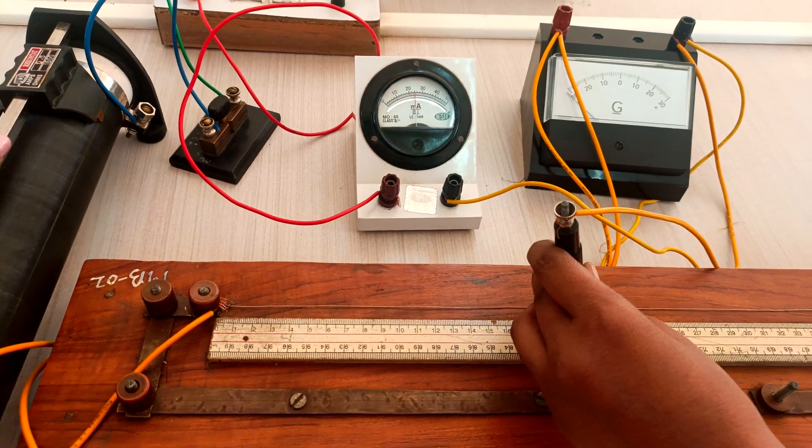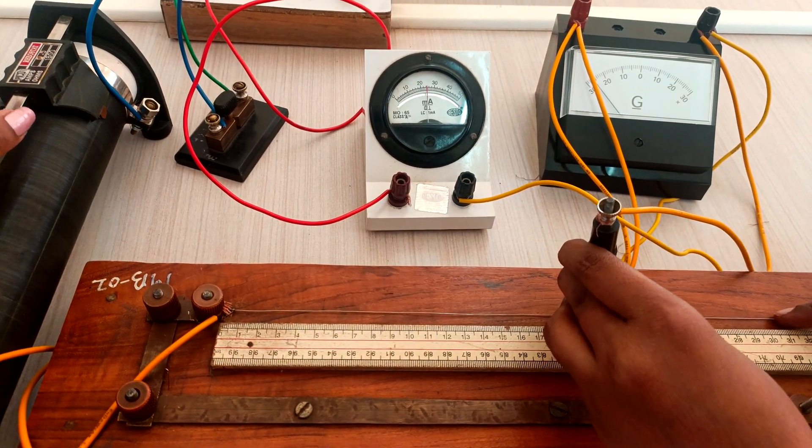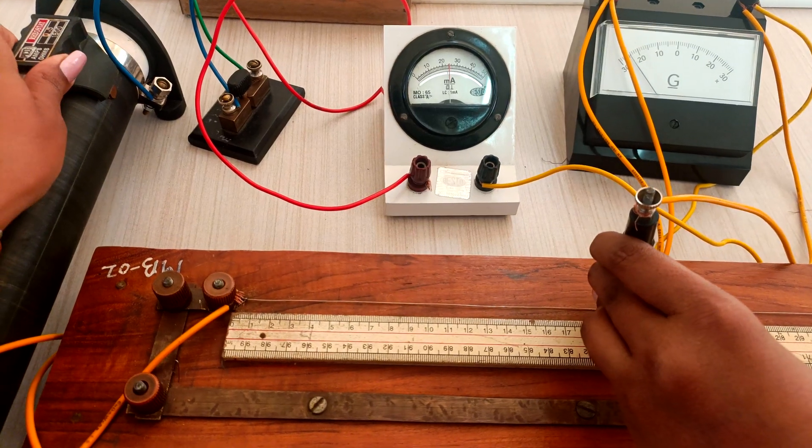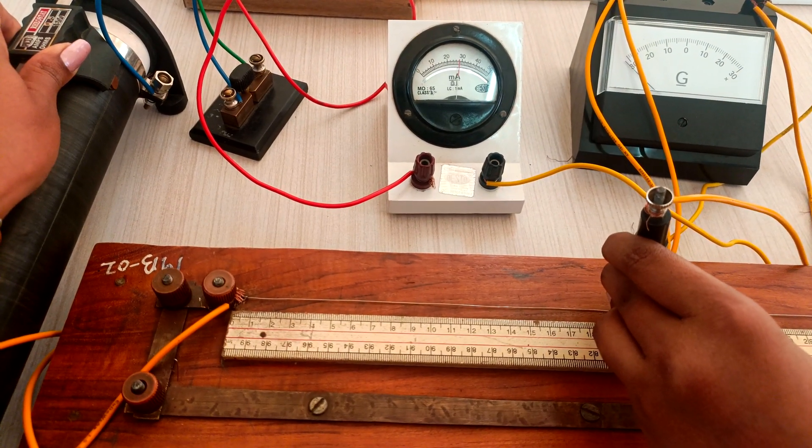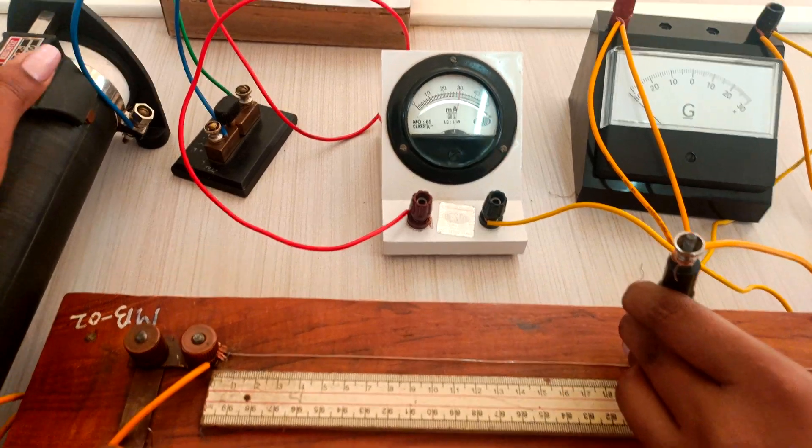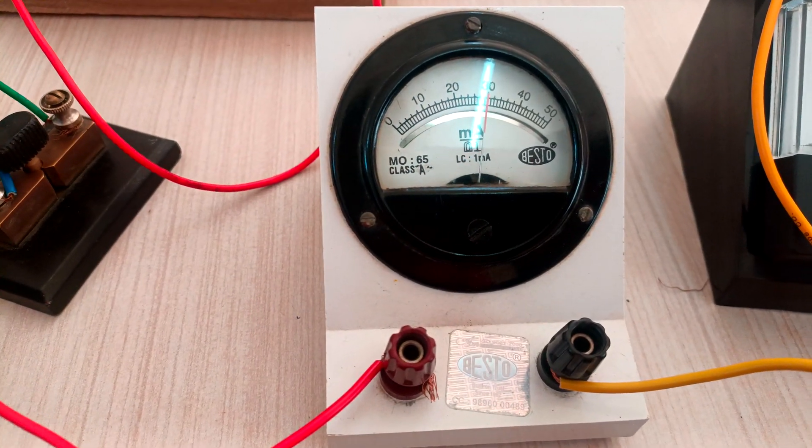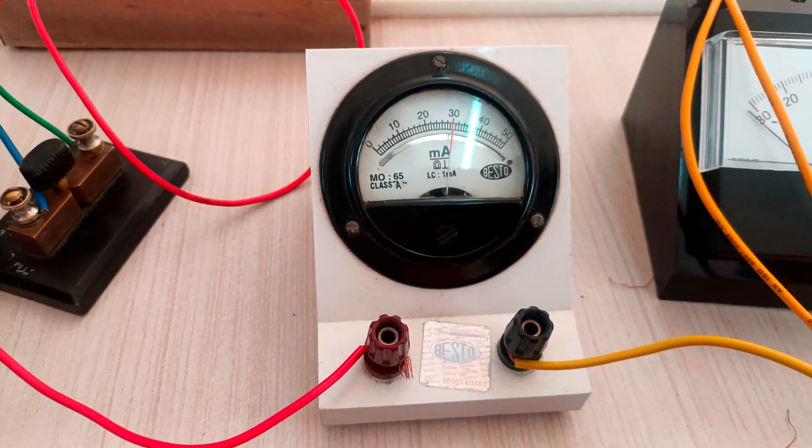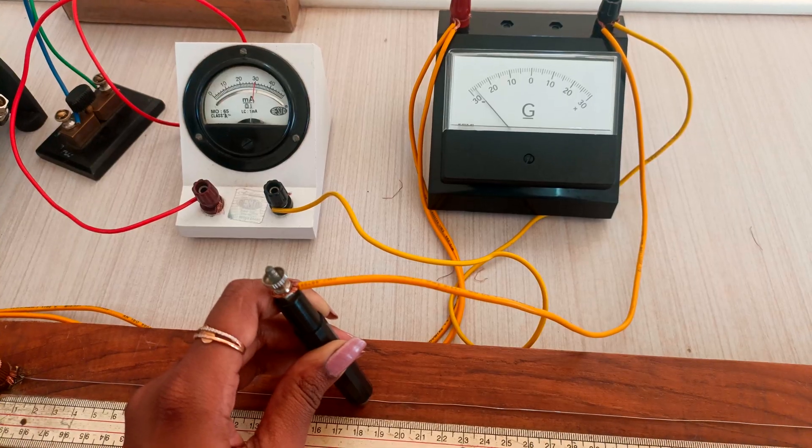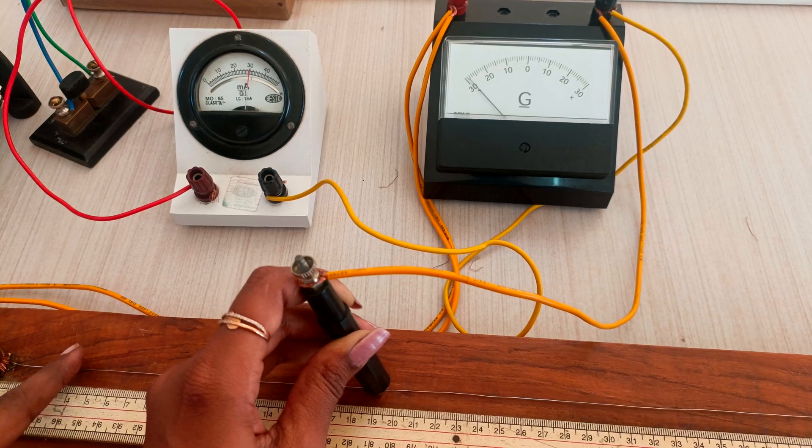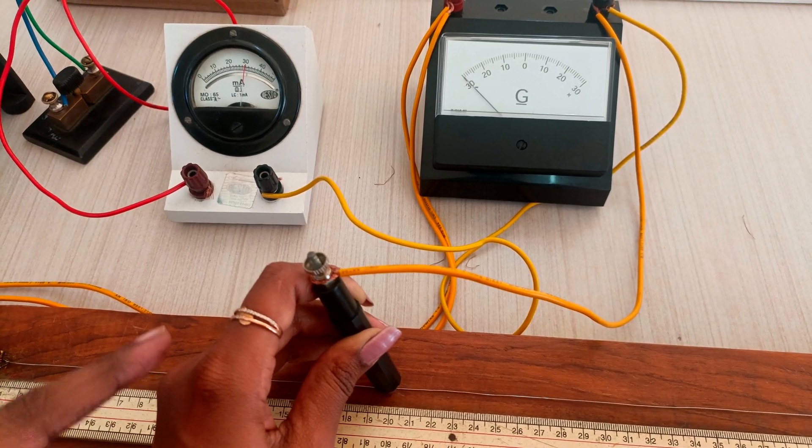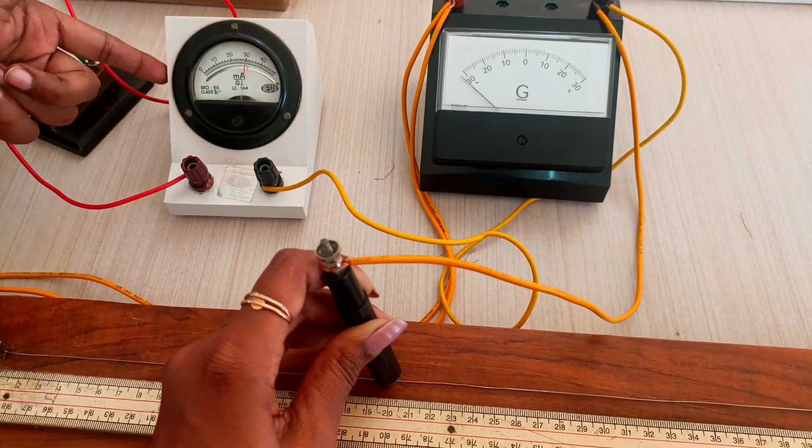Now place the jockey on the wire and using the rheostat knob adjust to 30 milliamps in the ammeter. You can see 30 divisions in the ammeter by adjusting the rheostat. Start by adjusting the length on the wire using the jockey. We are going to convert the galvanometer into ammeter.